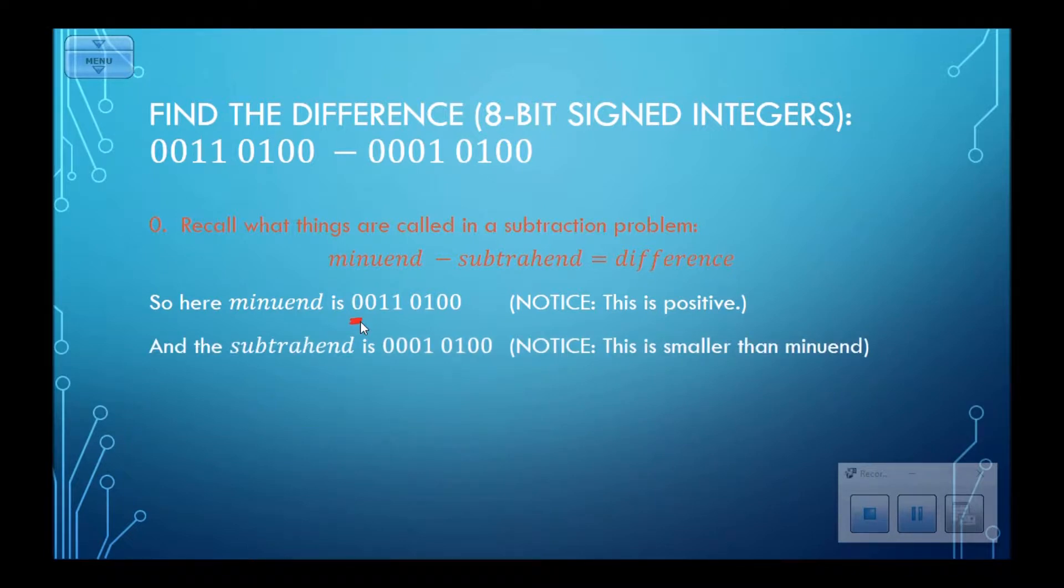The subtrahend is 0001 0100. Again, notice here, positive. And this is also smaller than the minuend. The minuend has a 1 in this place, the subtrahend has a 0. So the subtrahend is smaller.